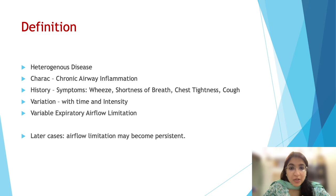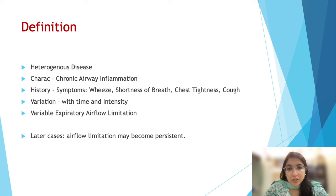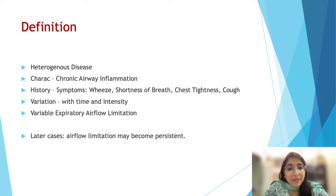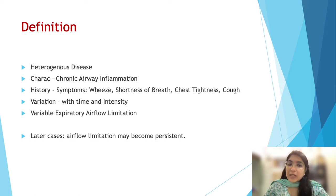If you perform diagnostic testing for asthma on one instance, you may get a positive diagnosis, but in another instance the spirometry may actually be normal. So it is variable with time and also in its intensity, and there is variable expiratory airflow limitation. However, over a period of time, asthma can start behaving like COPD if it's chronic, and there may be persistent airflow limitation in asthmatics as well.